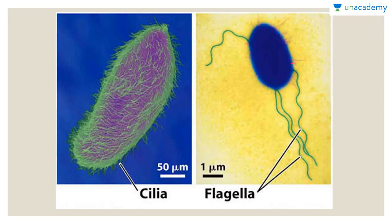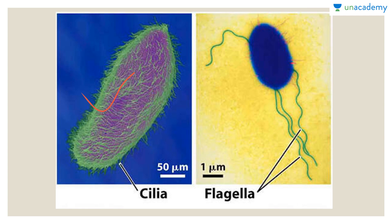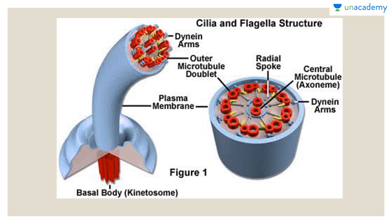Diagrammatically, a whole cell covered with these green fiber-like structures represents cilia, whereas a cell with only a few long structures represents flagella. Flagella are fewer in number, whereas cilia are many in number.